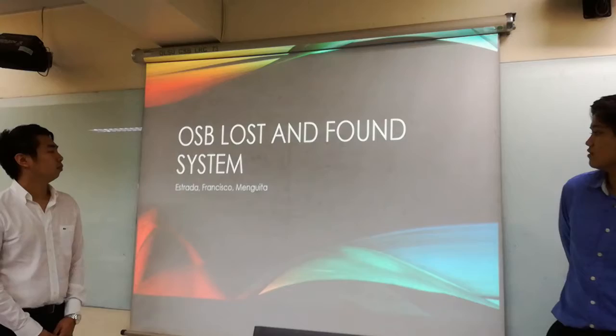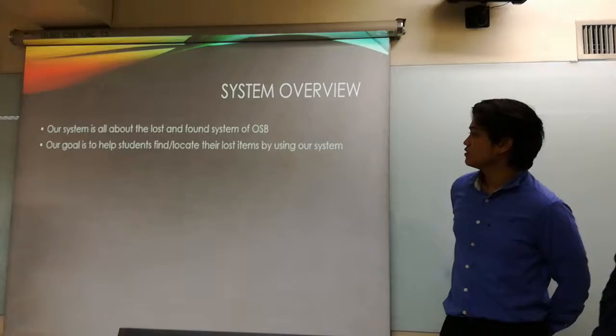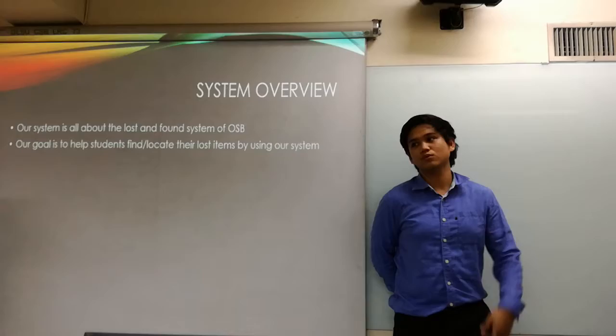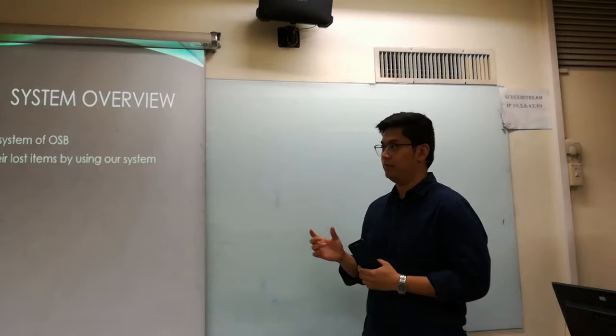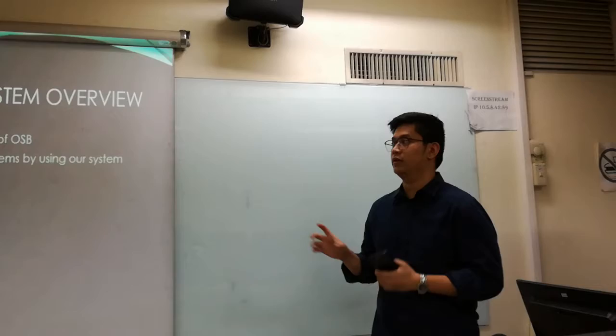Our system is all about the lost-and-found system of CSB. Our goal is to help students find and locate lost items through the office. The usual process is if you have a lost item — for example, your phone — you go to the OSB and check. But what if the OSB is closed? So our system helps students with the convenience of finding their lost items.